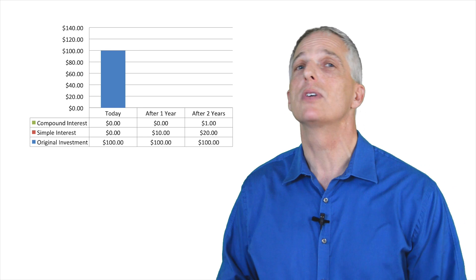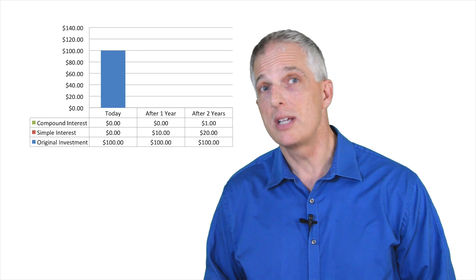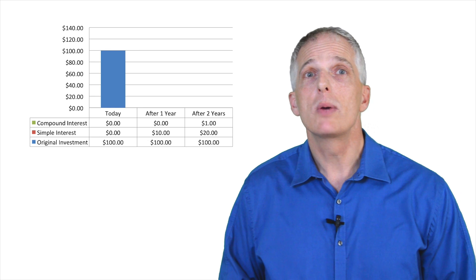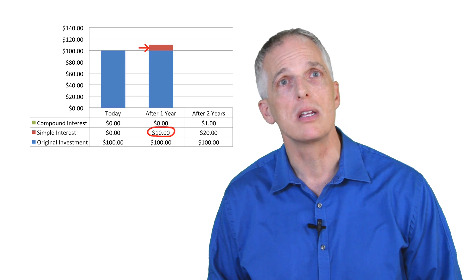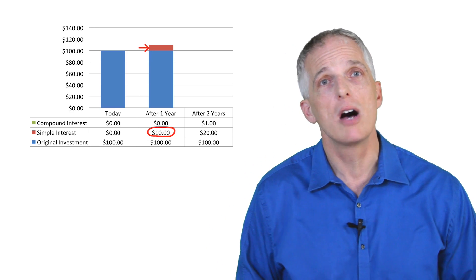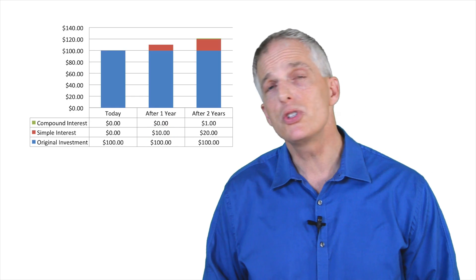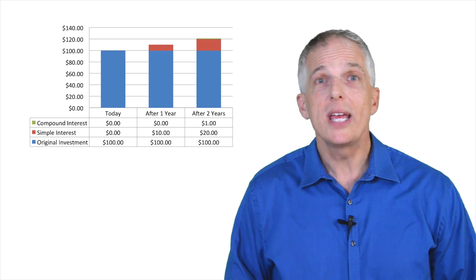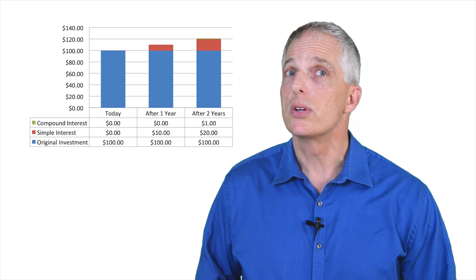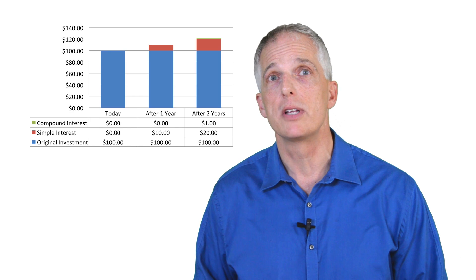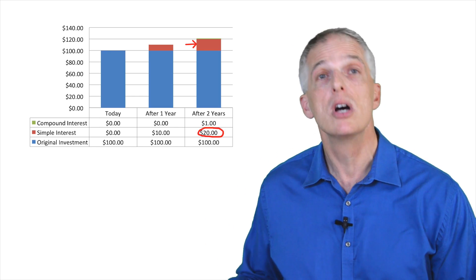Now let's see what happens if we invest $100 for more than one year. If we have the willpower to leave our savings alone, this graph reveals how our money will work for us. We start with $100 today. After one year, we will have $110, as discussed in the prior example — $10 of interest, denoted in red in the graph, and our original investment of $100. After two years, things get interesting. We continue to earn $10 in interest on our original investment, so after two years we have accumulated $20 of interest on our original $100.